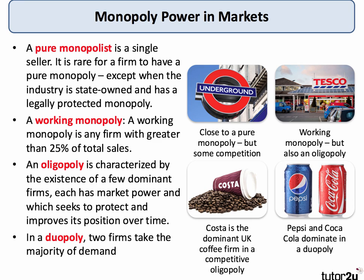A working monopoly is defined as a firm or business with greater than 25% of market sales. There are lots of industries where firms have built up a market share in excess of 25%. There's still competition in the market but they have a working monopoly position. There's also a technical definition of a dominant firm, which is a business that has more than 40% of the market.